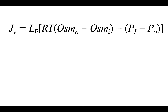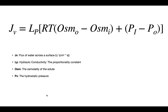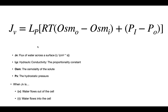This equation helps us determine where fluid is going to go. JV is the flux of water across a surface — the amount of volume that passes through a certain area per unit time. LP is the hydraulic conductivity, describing how well water can pass through the membrane. OSM is the osmolality of a solute, and PX is the hydrostatic pressure. When JV is positive, water flows out of the cell. When JV is negative, water flows into the cell.